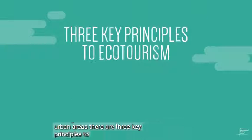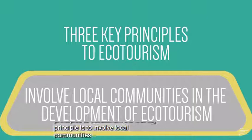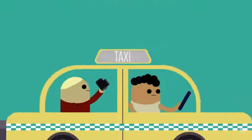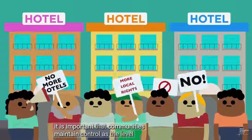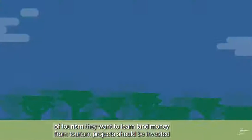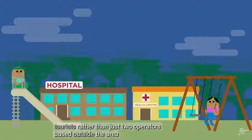There are three key principles to ecotourism. The first key principle is to involve local communities in the development of ecotourism. It is important that communities maintain control over the level and kind of tourism they want in their land. Money from tourism projects should be invested in the communities who are hosting tourists, rather than just to operators based outside the area.